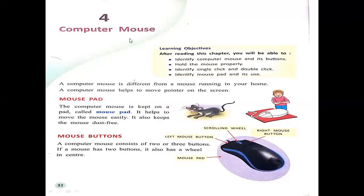Assalamu alaikum class, how are you all today? We are going to start Chapter Number Four: Computer Mouse. The learning objectives are: identify the computer mouse and its buttons, hold the mouse properly, identify single click and double click, and identify the mouse pad and its use.